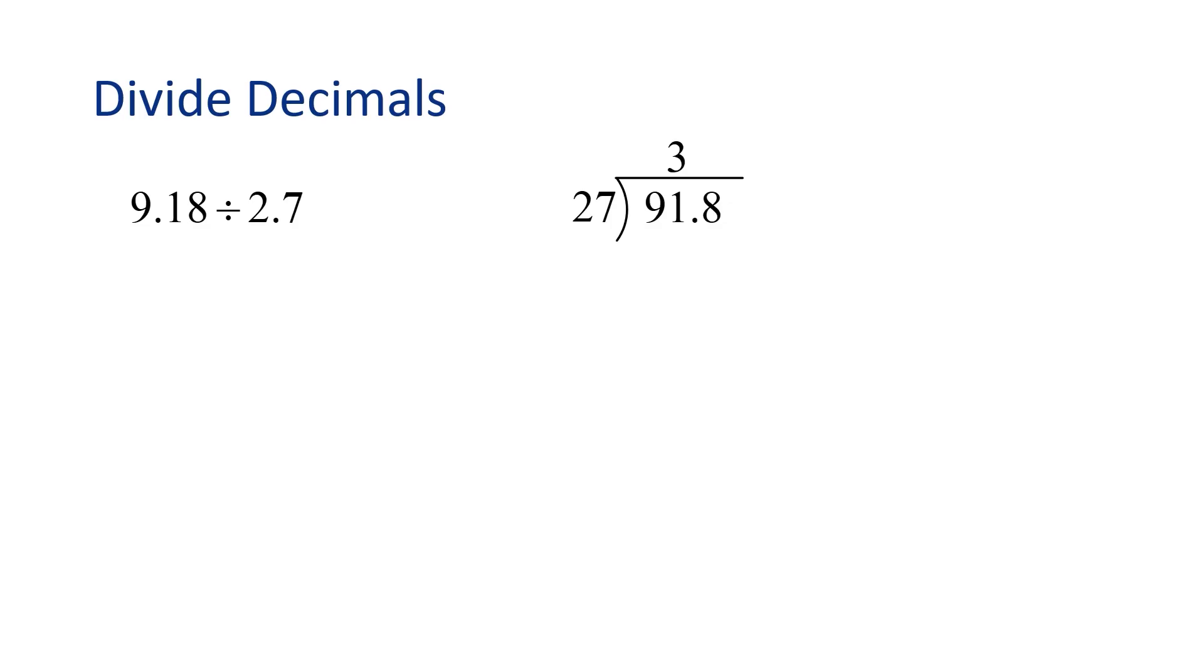3 times 27, that's 81. Now we need to subtract. 91 minus 81 is 10.